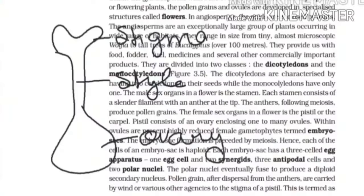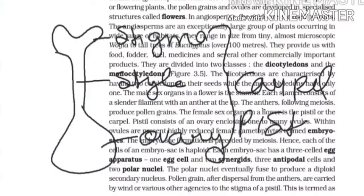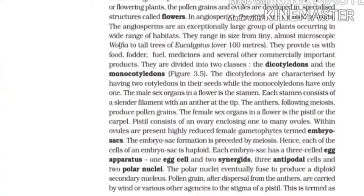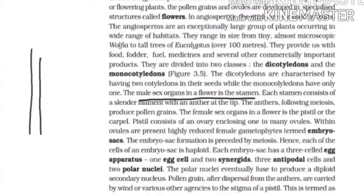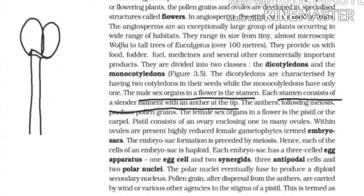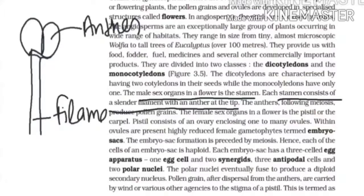Inside the ovary, seeds are produced and double fertilization occurs. These are the parts of carpel or pistil. The male sex organ in the flower is the stamen. Each stamen consists of a cylindrical filament with an anther at the tip. The filament helps the anther to attach with the portion of the flower.